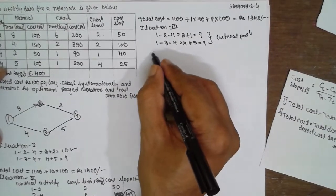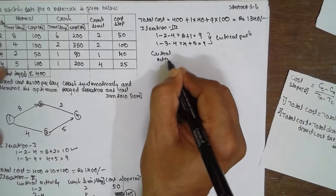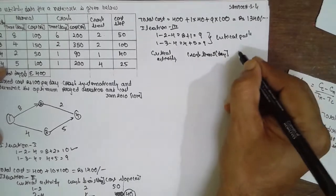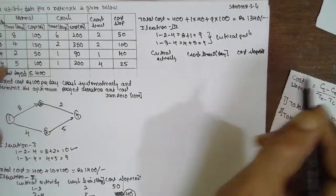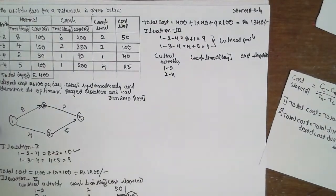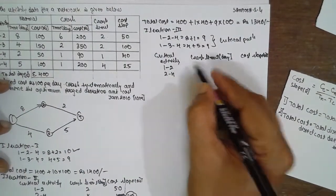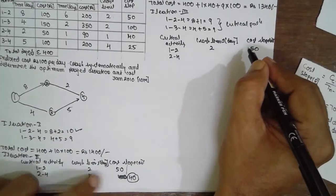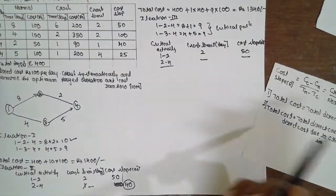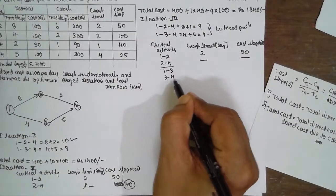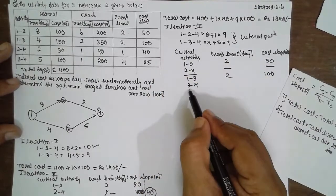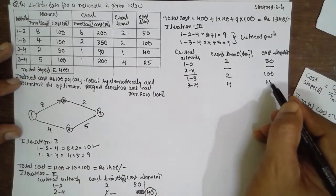Now we are going for crushing the activity. Because there are two critical paths, for path 1-2-4: activity 1-2 has crash limit 2 and slope 50; activity 2-4 is already crashed. For path 1-3-4: activity 1-3 has crash limit 2 and slope 100; activity 3-4 has crash limit 4 and slope 25. Select the smallest slope from each critical path: 50 from path 1-2-4, and 25 from path 1-3-4.